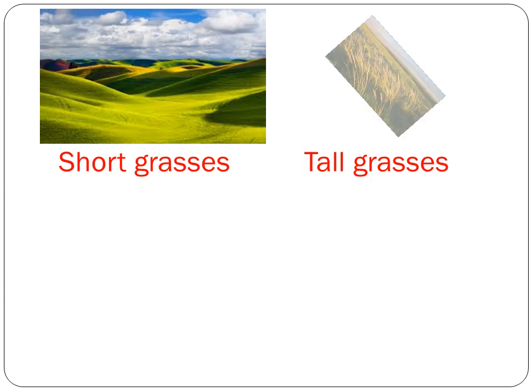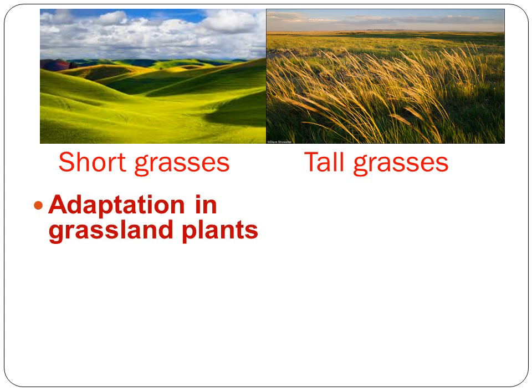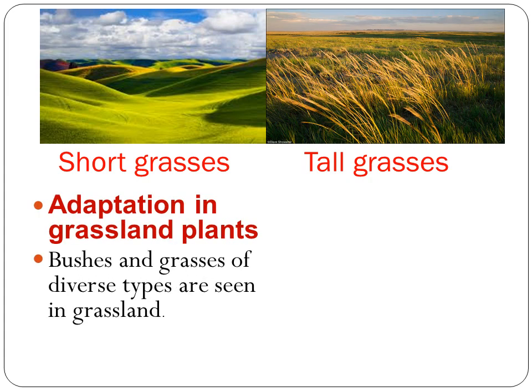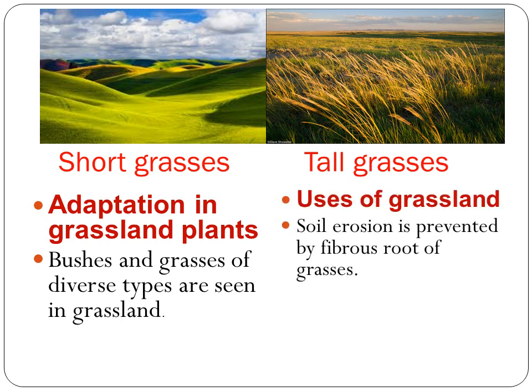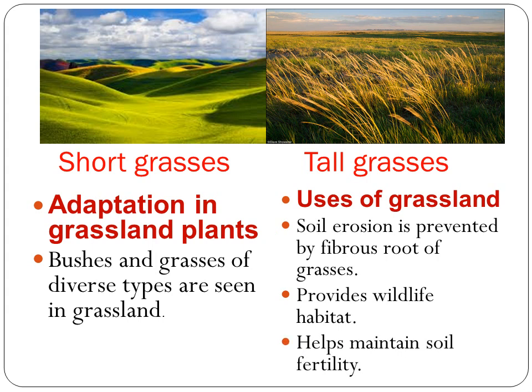Adaptation in grassland plants: Bushes and grasses of diverse types are seen in grassland. Uses of grassland include preventing soil erosion through the fibrous roots of grasses, providing wildlife habitat, and helping maintain soil fertility.